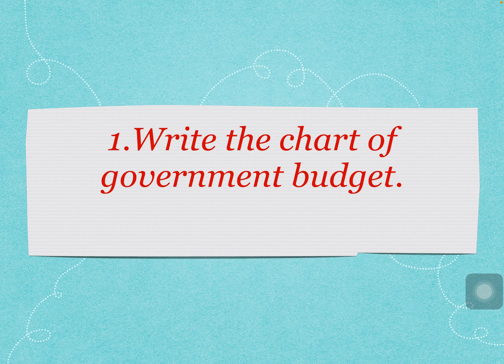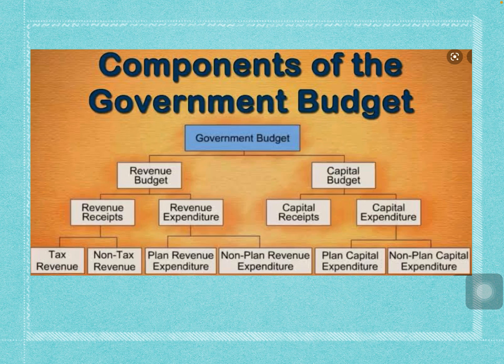The first question requires us to write only the chart of a government budget. There is a constitutional requirement in India, according to Article 112, to present before the parliament a statement of estimated receipts and expenditure of the government in respect of every financial year. The financial year runs from 1st April to 31st March. This particular annual financial statement constitutes the main budget document of the government.